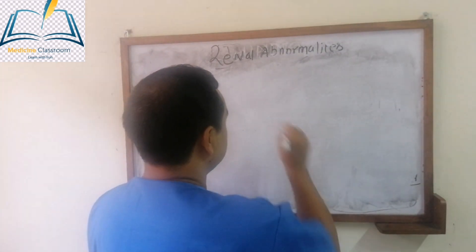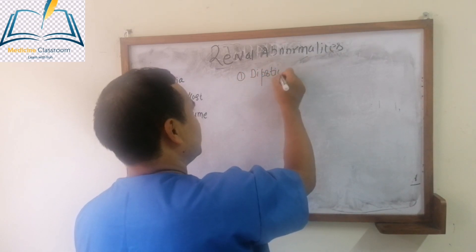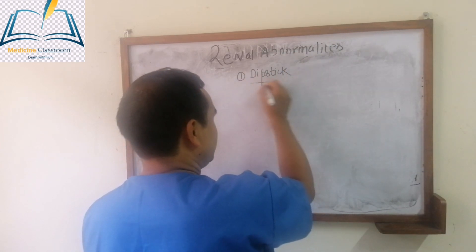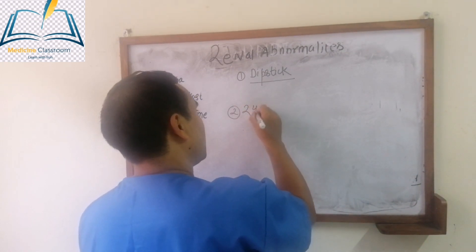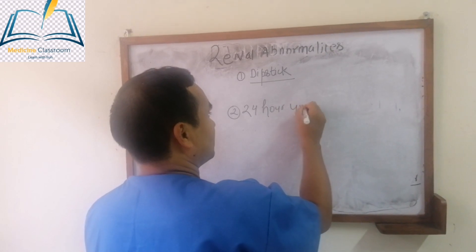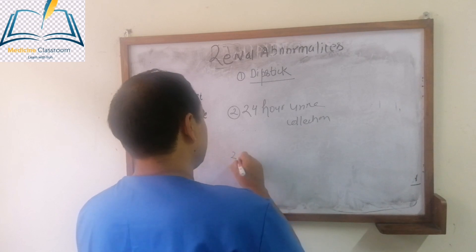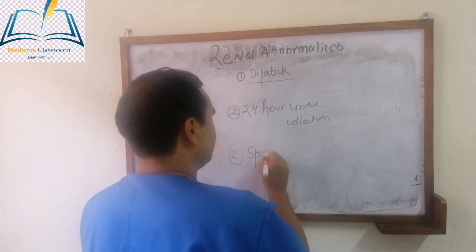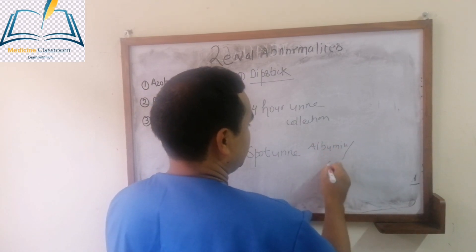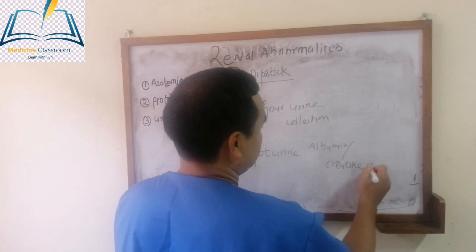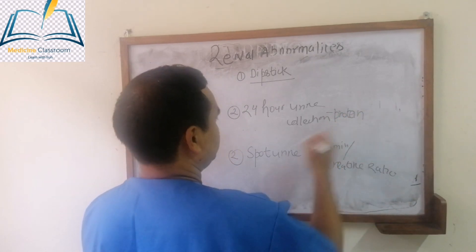Now, how can we estimate protein in the urine? There are four techniques: the dipstick, 24-hour urine collection, and the spot urine albumin-to-creatinine ratio.